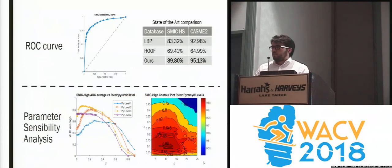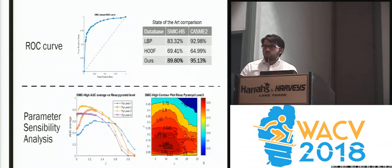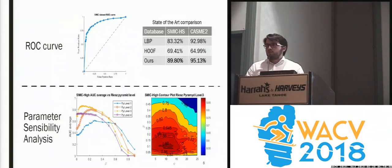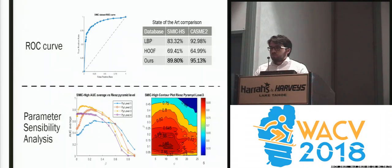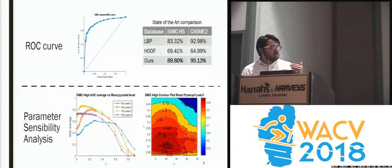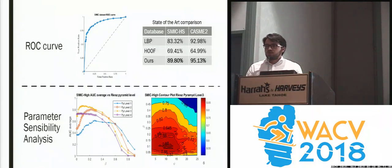For evaluation we use ROC curves, comparing the true positive rate versus the false positive rate, and use the area under the curve as our measurement. We compare with the state of the art, including histogram of oriented features and LBP methods, and our method proved to be better. We also performed a parameter sensitivity analysis to check the impact of pyramid level selection on accuracy and the robustness of our method when changing different parameters.